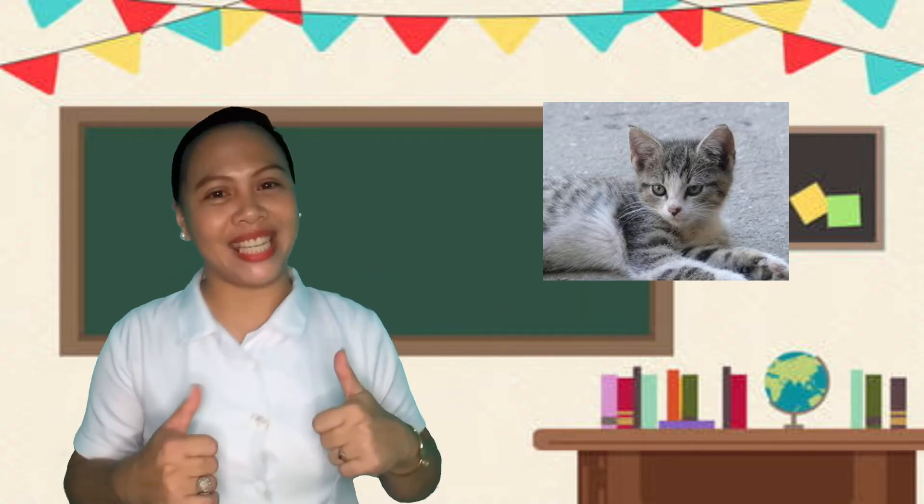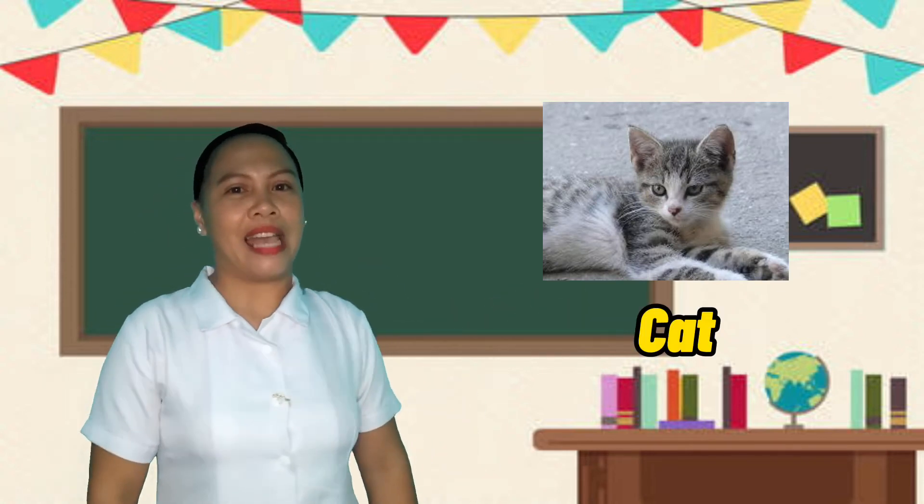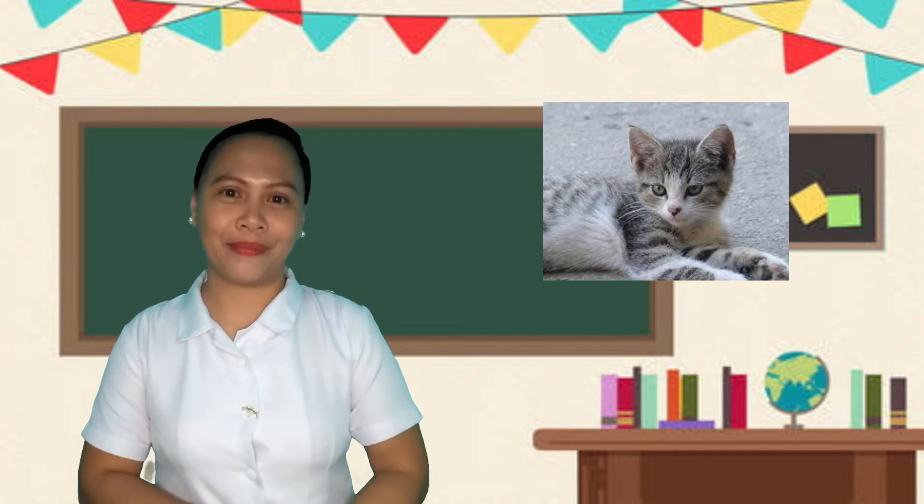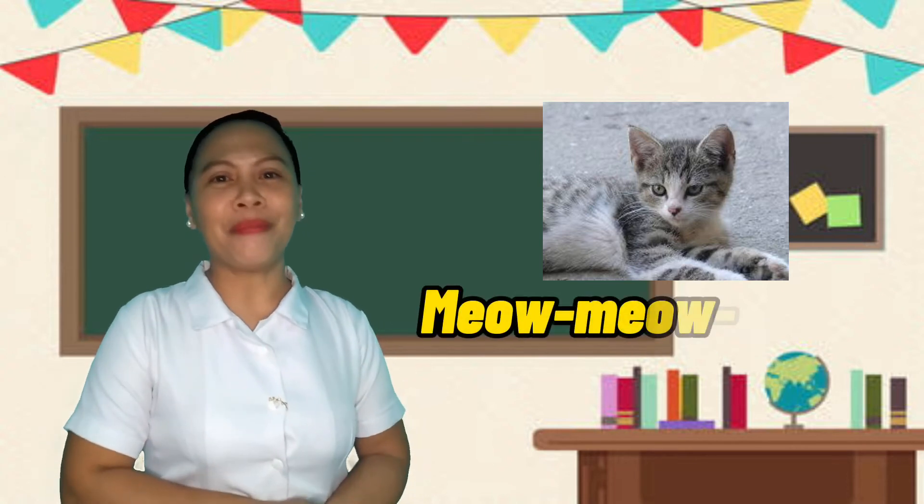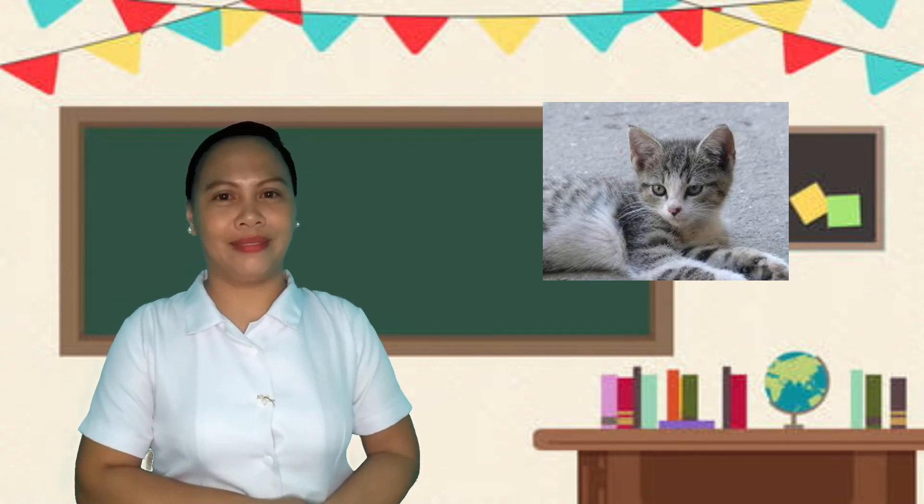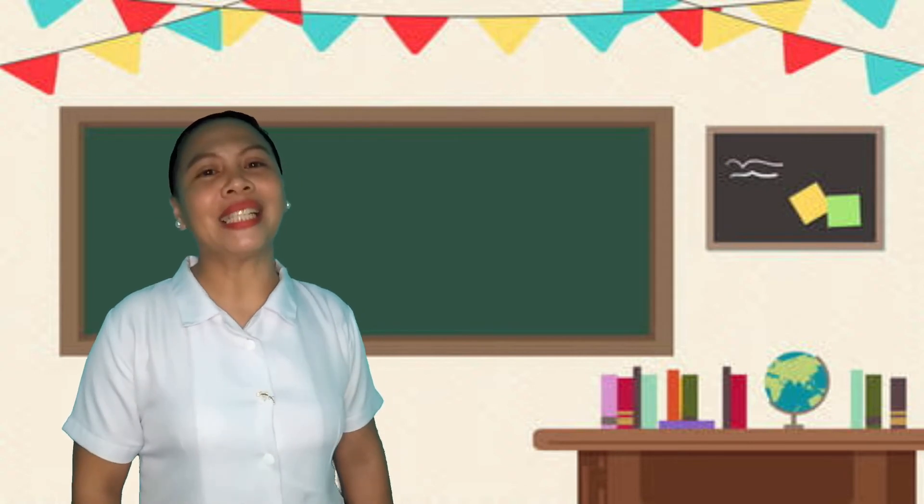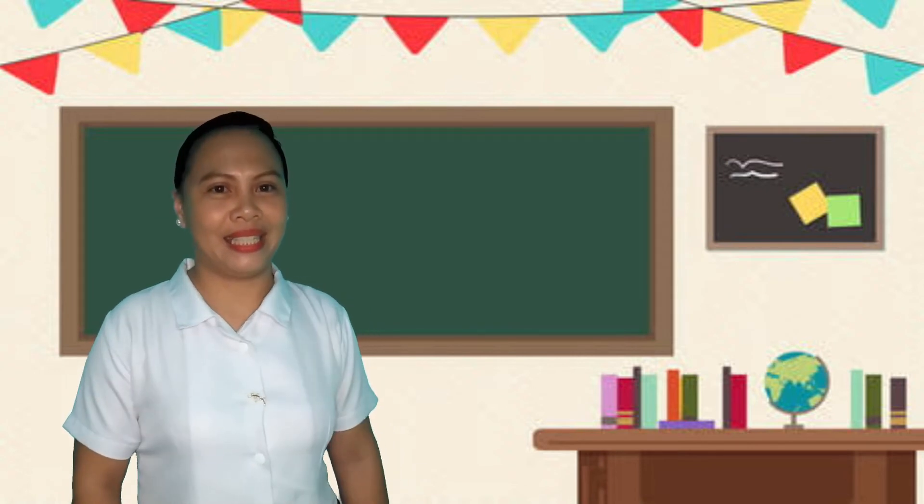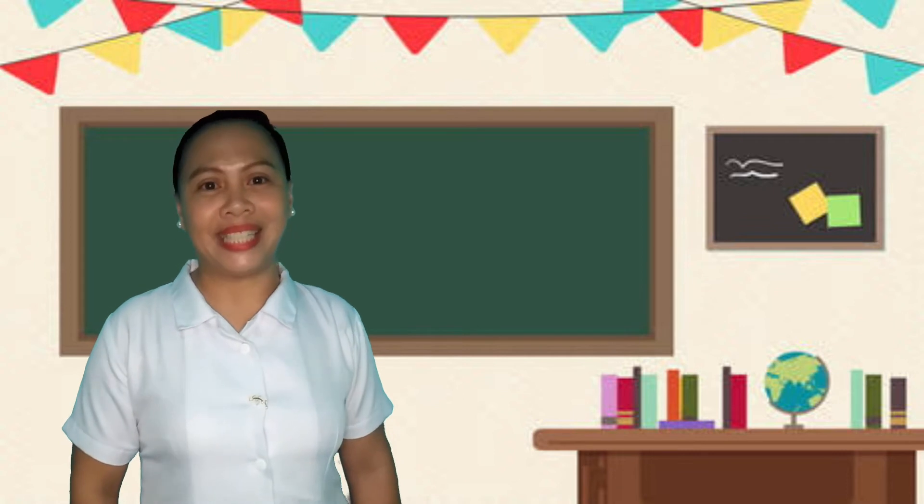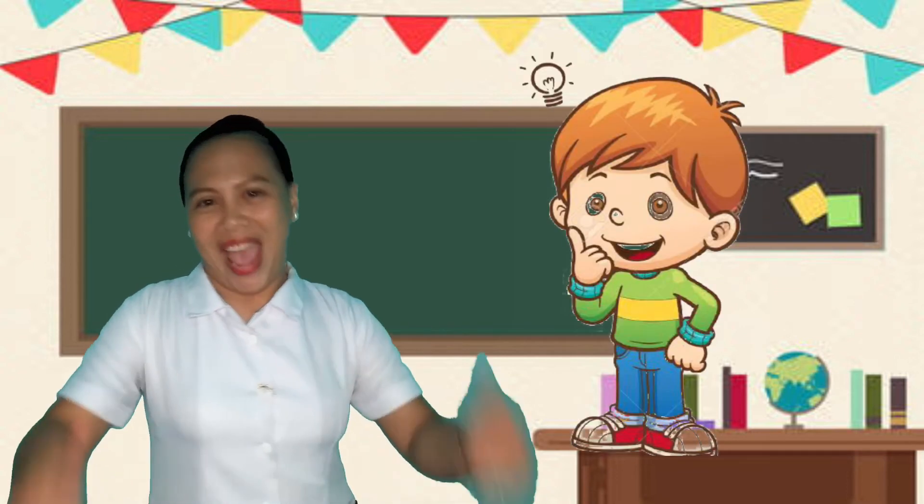Next picture. Very good! A cat. And a cat says meow, meow, meow. So, those are the animals that live on land. Can you give me another example? Very good!